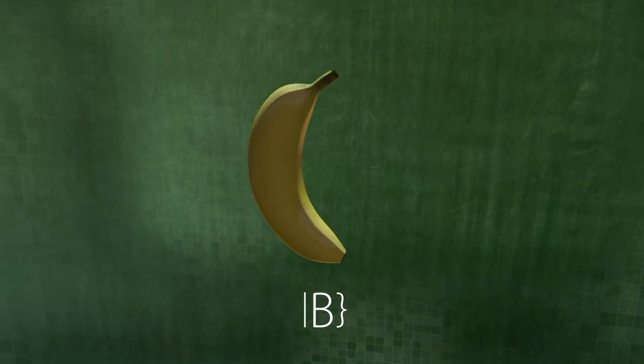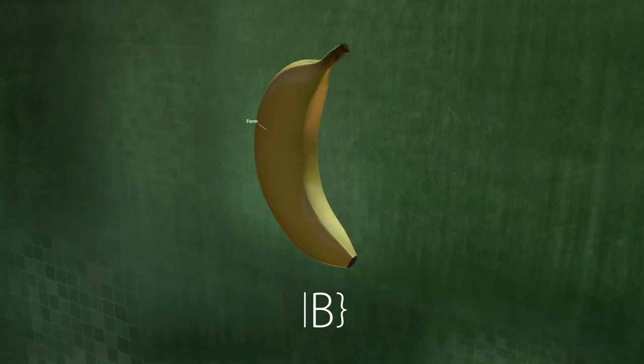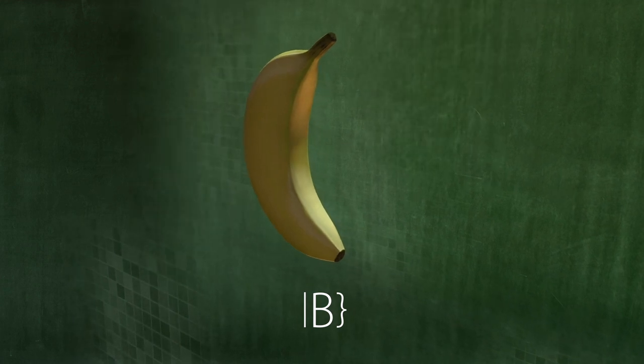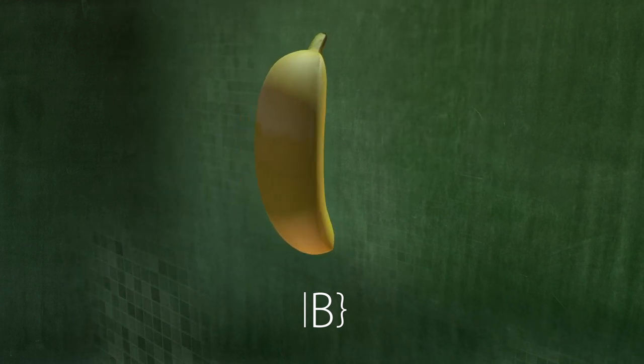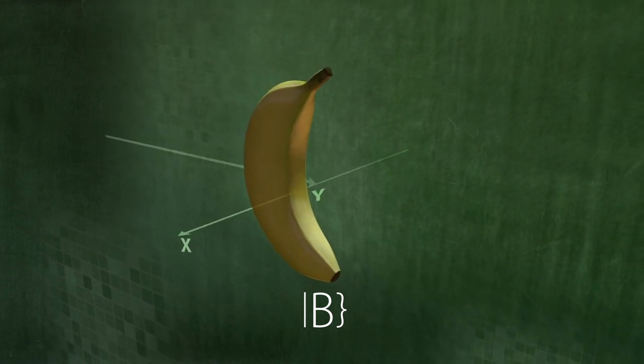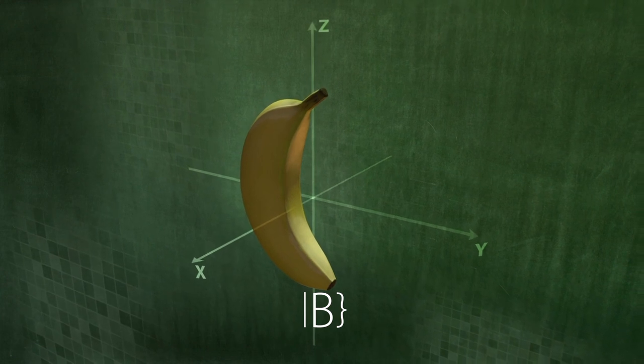The state banana has many different properties, such as a shape, a color and a taste. Of course, we can also rotate the banana. Three-dimensional objects have three different axes of rotation: the x-axis, the y-axis and the z-axis.